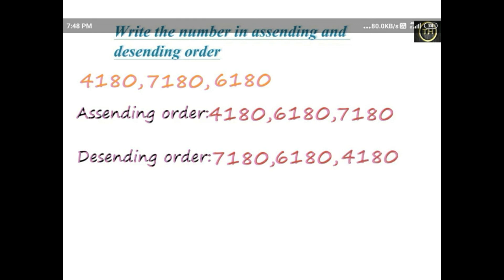Write the numbers in ascending and descending order. What is ascending order? Ascending order means going from smaller number to bigger number — for example, 1, 2, 3, 4, 5, 6, 7, 8, 9, 10. That is ascending order: small number to bigger number.